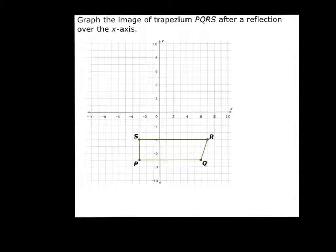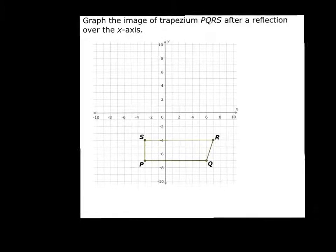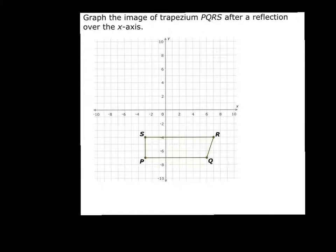Next is Reflection, so you just reflect it over where they say. In this case they say the x-axis, so it will be over this line here. You want to go, R is 1, 2, 3 away from the x-axis. You go 3 up from the x-axis. You go 1, 2, 3.